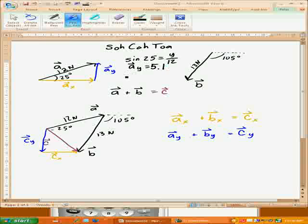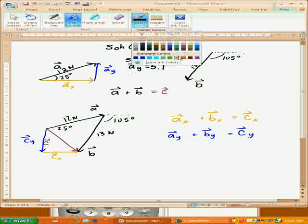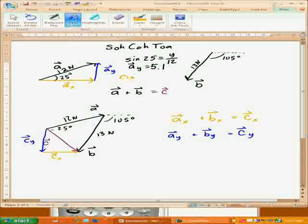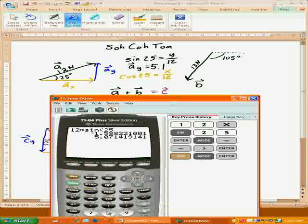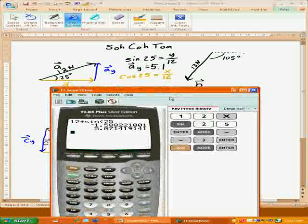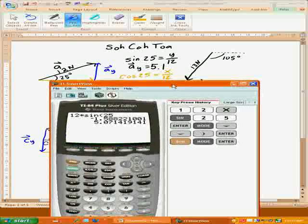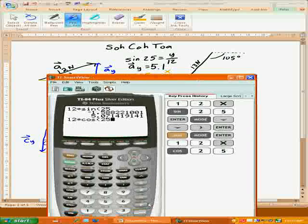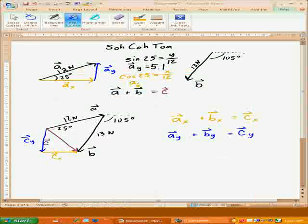And then we'll do the same thing with the cosine. So I'm going to switch over to blue for that one because that's going to give me the X direction. So cosine of 25, adjacent over hypotenuse, so that'll be X over 12. And so let's take our calculator and we'll do 12 times the cosine of 25, and then we'll push enter, and we get 10.9. So AX is 10.9 newtons, of course. So now I've got A.